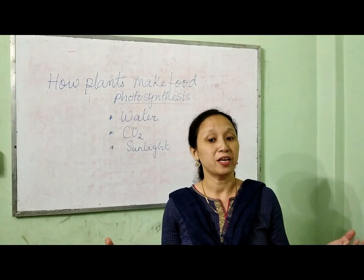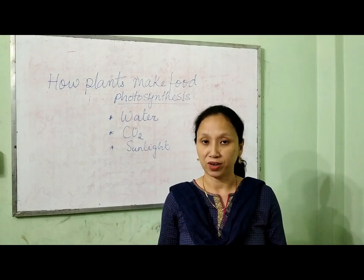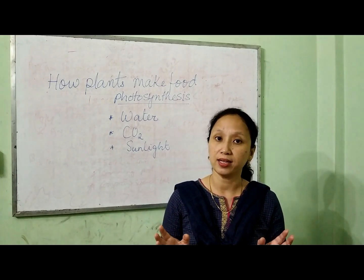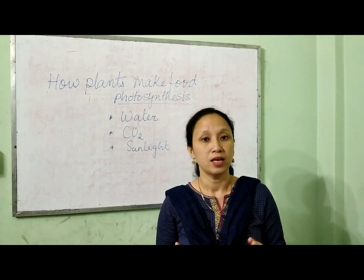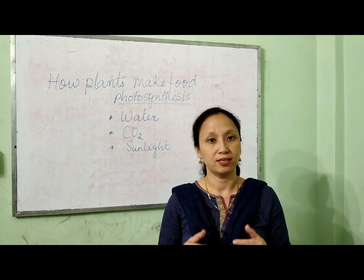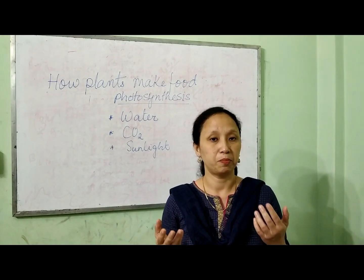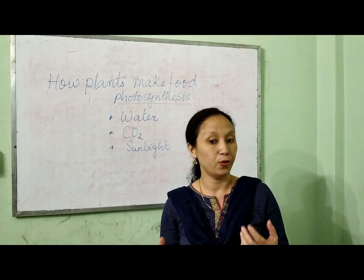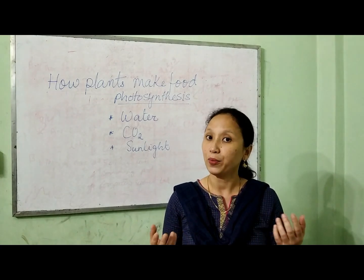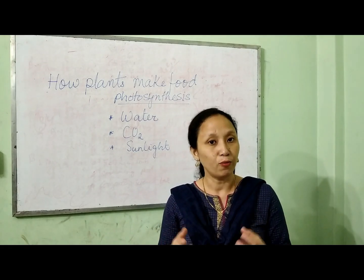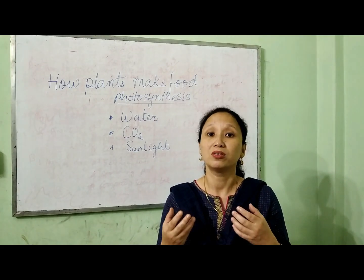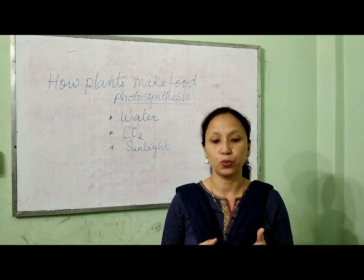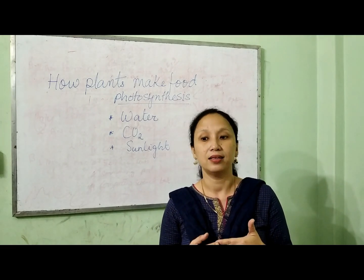After the food is prepared, it is transported to the different parts of the plant body through the veins and the stem. Some part of the food is changed to other substances for the purpose of growth, making flowers, fruits, seeds, and repairing damage. The rest of the food is converted into starch and stored in the fruits, stems, roots, leaves, and seeds.